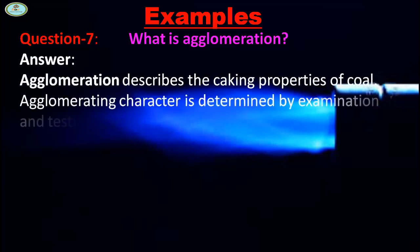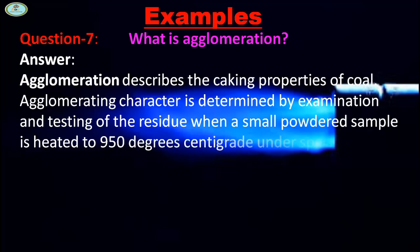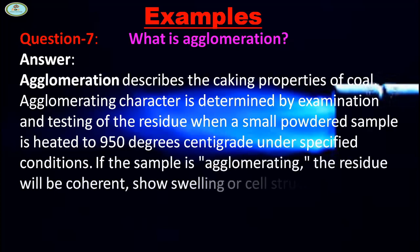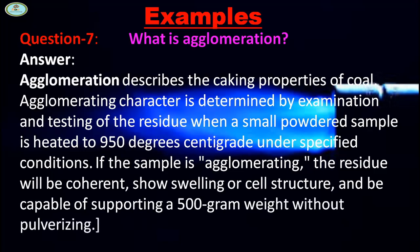Agglomerating character is determined by examination and testing of the residue when a small powdered sample is heated to 950 degrees Celsius under specified conditions. If the sample is agglomerating, the residue will be coherent with swelling or cell structure and be capable of supporting a 500 gram weight without pulverizing.